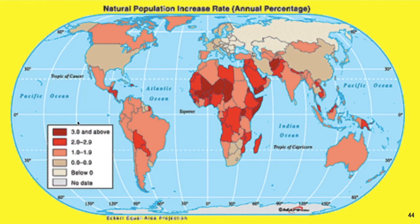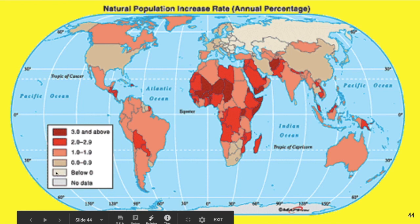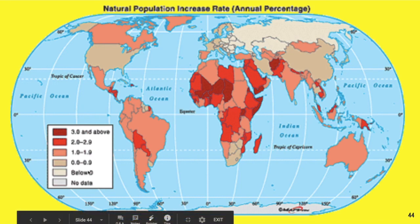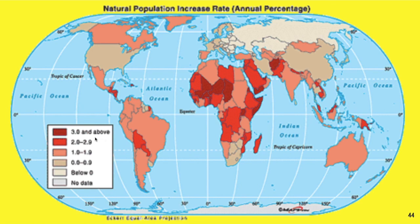Now, a couple more things about this. As you look around the world, you can see where population increases — this is natural increase — as a percentage is highest and lowest around the world. Areas with a creamy white or gray color have pretty low natural increase. Areas with darker reds have very high natural increase. And unfortunately, this kind of lines up with what we were saying, where some of the more underdeveloped or developing countries are experiencing that higher natural increase.